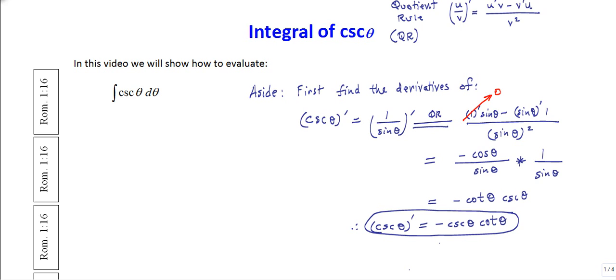So to summarize, the derivative of cosecant theta is equal to minus cosecant theta times cotangent theta. This is very similar in form to the derivative of secant theta — the only real difference is you pick up a minus sign.